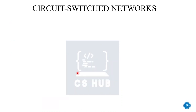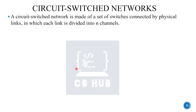We are going to look at circuit switched networks. A circuit switched network is made up of a set of switches connected by physical links, in which each link is divided into N channels. The circuit switch uses actual physical links, and the capacity is divided into N channels with different channel allocations.